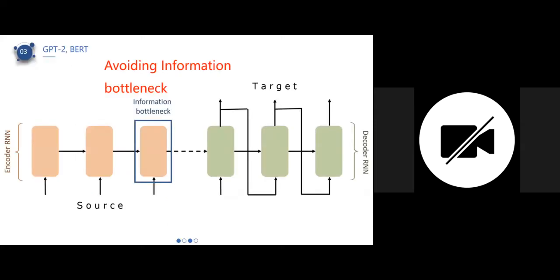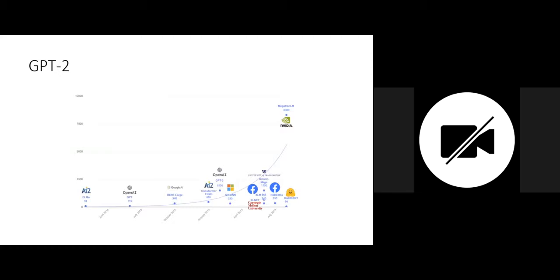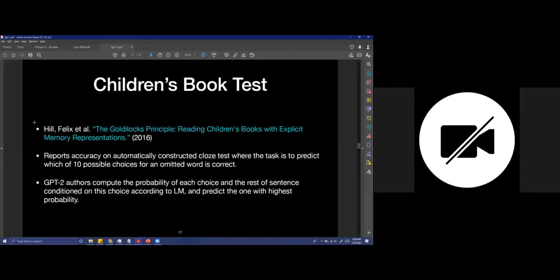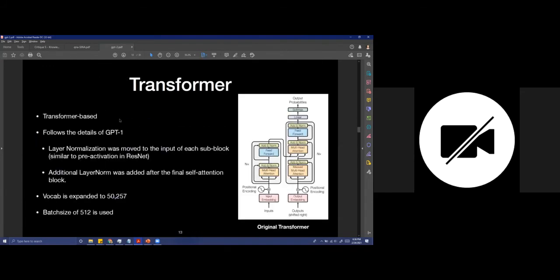Before going to GPT-2, I want to briefly discuss transformers, because the transformer is the basic building block of most language models. Looking at the architectural block diagram on the right side of the screen, the transformer model makes use of something called attention. This paper was created by Google in 2017. It has feed-forward networks with normalization, and something called encoder and decoder blocks.